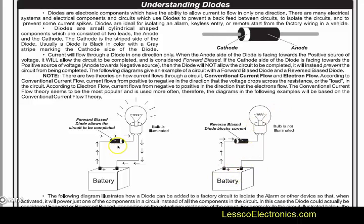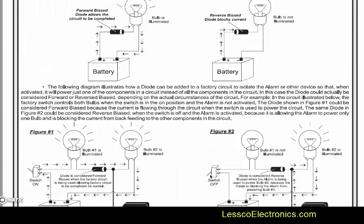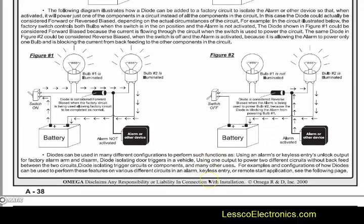Flip it around backwards — you have positive coming in, it blocks the current, no bulb, not going to work. So you can see what's going on; the diode is doing its job.